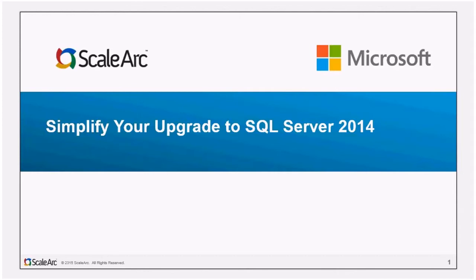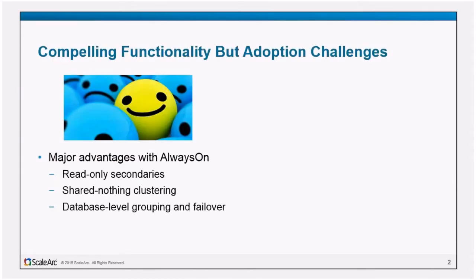We're talking about some really compelling functionality in the latest versions of SQL Server, both 2012 and 2014, particularly with the advent of Always On, which offers some fantastic opportunities to improve the availability, serviceability, and scalability of database infrastructure. We've got the opportunity to do read-only secondaries, both within and spanning data centers. We are moving to a shared-nothing architecture, which really suits cloud migration projects. And we have the ability to get grouping and failover at the database level in ways that SQL Server hasn't had before — really compelling stuff that can dramatically improve application uptime.